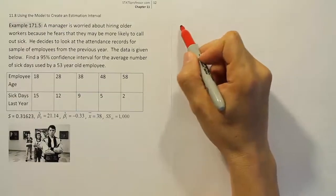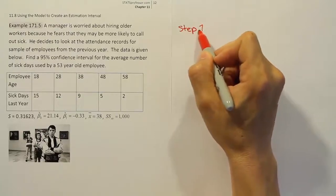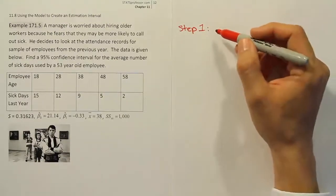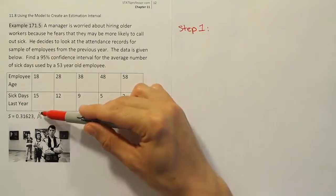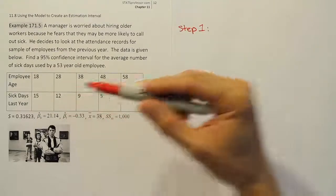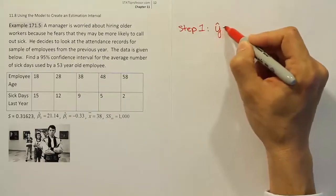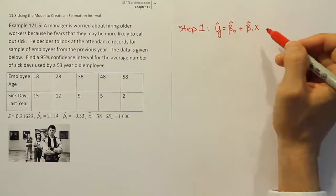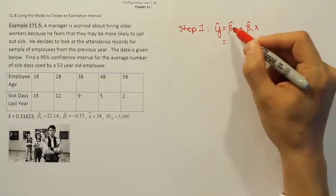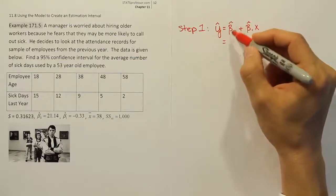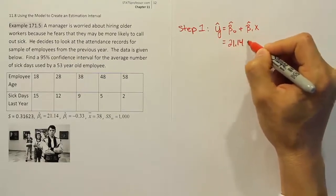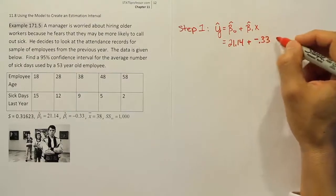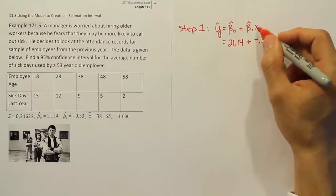Normally step one is our data step. Based on the structure of the interval required for this problem, I would like you to first come up with the linear regression model. We're going to need that model. They gave us beta naught hat and beta 1 hat, the pieces that fill in the model. Remember y hat is equal to beta naught hat plus beta 1 hat times x. When we plug that in for our particular scenario, the beta naught hat is 21.14 plus the slope estimator, which is negative 0.33 times the x value.